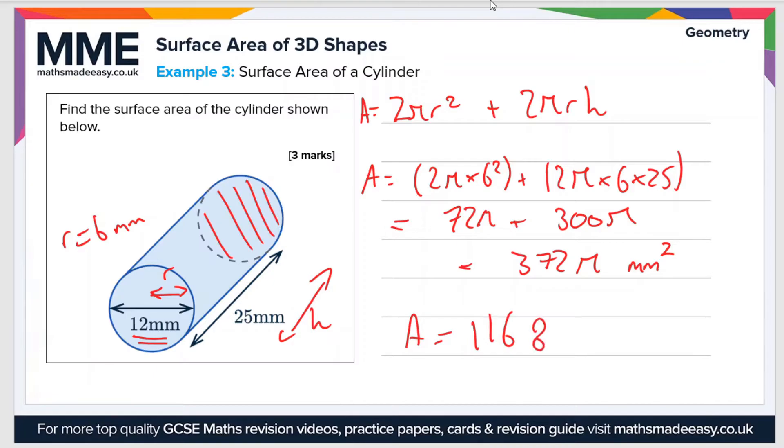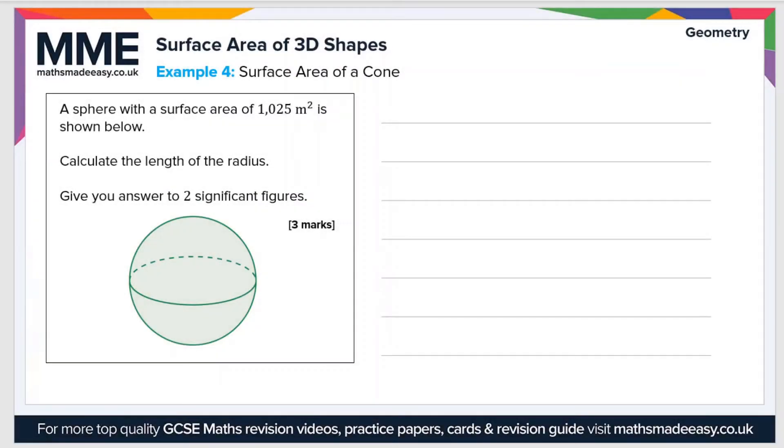Let's take a look at a second example now. A sphere with a surface area of 1025 meters squared is shown below. Calculate the length of the radius, give your answer to two significant figures. Well this time we're going backwards, so we've been given the area and we need to work out the radius.